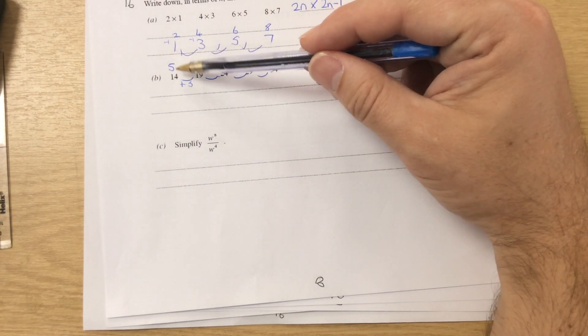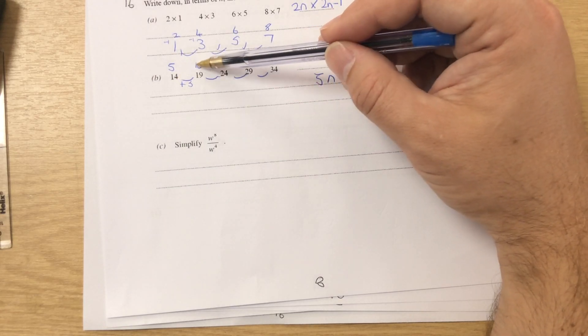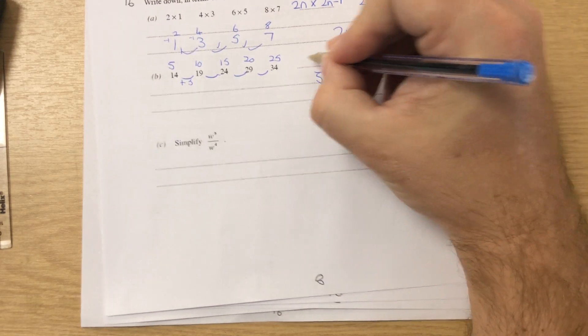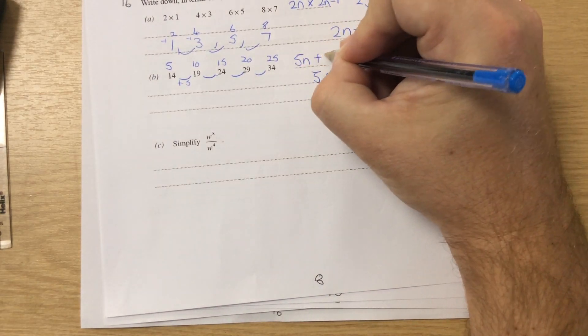And then you're asking, how would you get from 5 to 14, 10 to 19? You're adding on 9. So the answer to this one is 5n add 9.